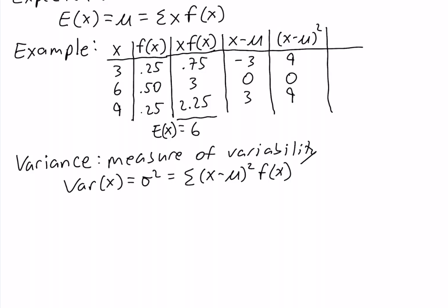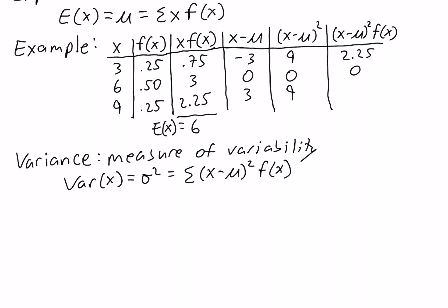In our last column, we're going to multiply the previous column by f of x. So 9 times 0.25 is 2.25, 0 times 0.5 is 0, and 9 times 0.25 is again 2.25. To get the variance, we simply sum the values in this column, so the variance is equal to 4.5.